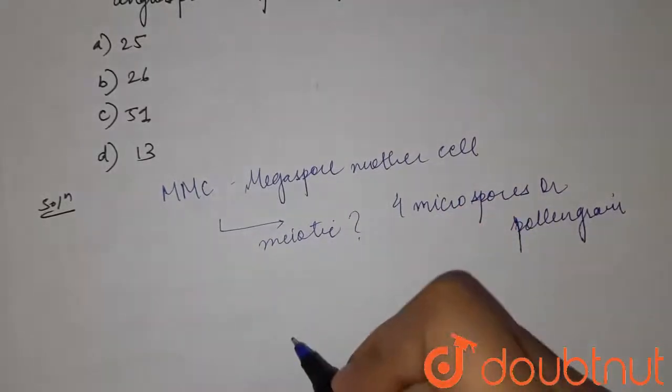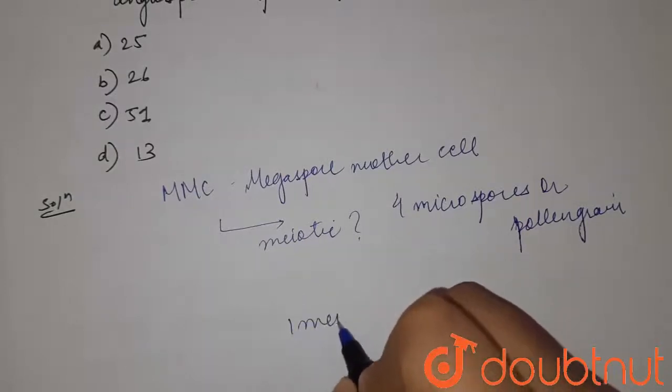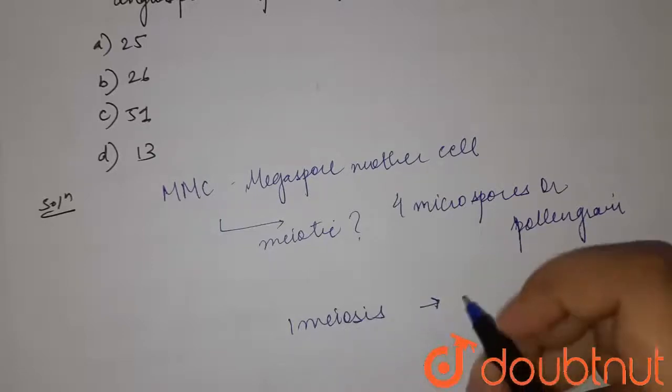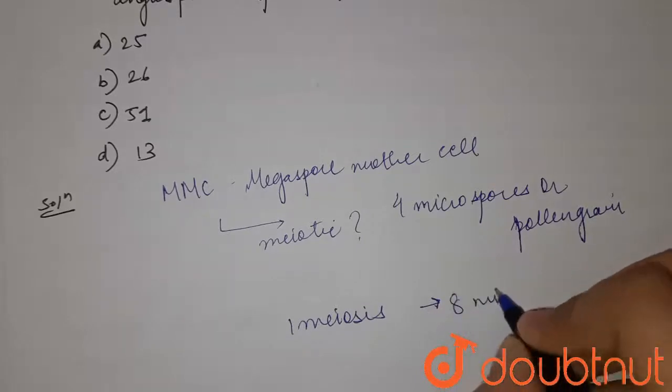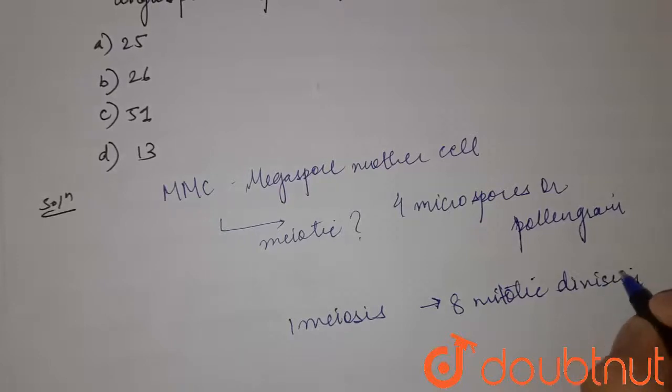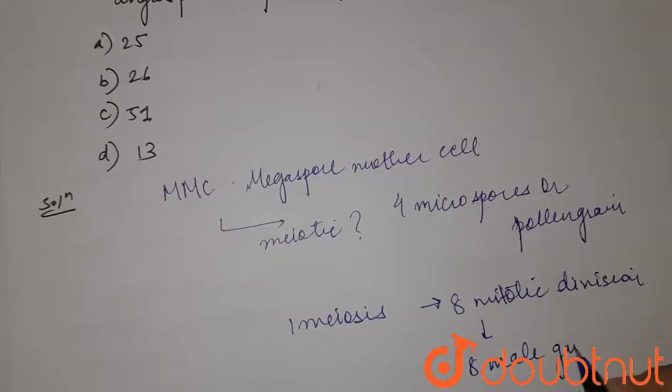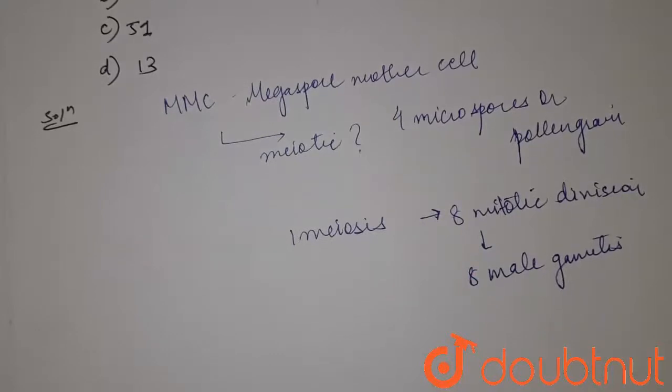For one microspore mother cell, it goes through one meiosis and eight mitotic divisions to form eight male gametes. For example, for the formation of 16 male gametes, there would be two meiotic divisions.